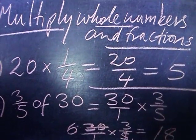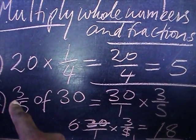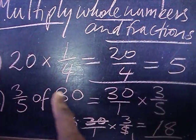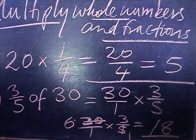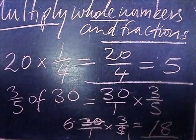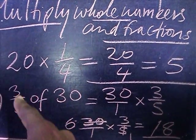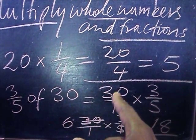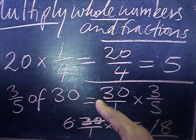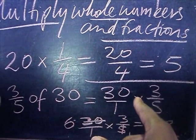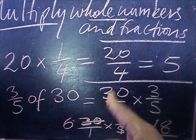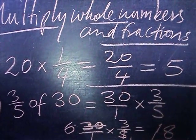Now you have a next one here: three-fifths of 30. 'Of' means that you have to multiply. So three-fifths of 30, I express it as a fraction: 30 over 1 times three-fifths. You can have the three-fifths first times 30, it doesn't matter, it comes to the same thing.